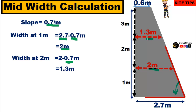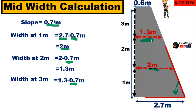Now, if you want to cross-check whether the procedure you have adopted for calculation of widths at random heights is correct or not, here is the cross-check at 3 meters: if you subtract 0.7, which is the slope, from the width of 1.3, it should be equal to 0.6 meters — and indeed it is 0.6. This confirms that the procedure adopted for calculation of these widths is correct.